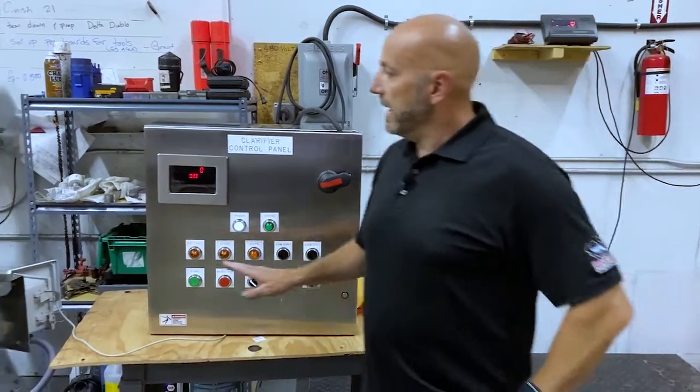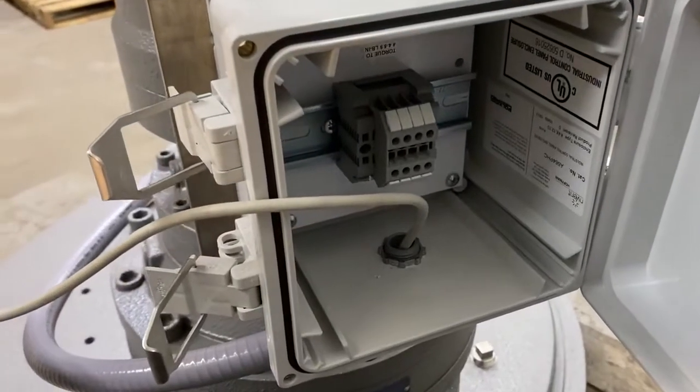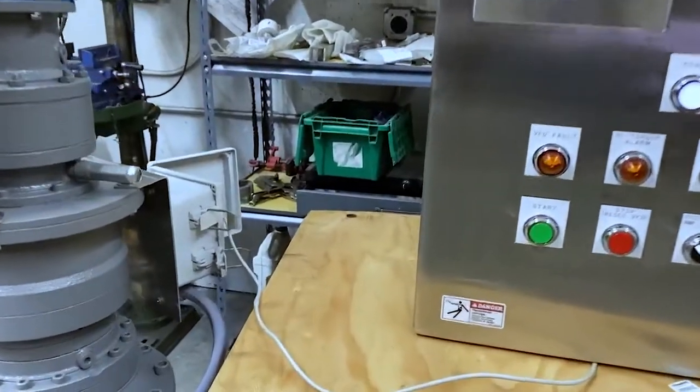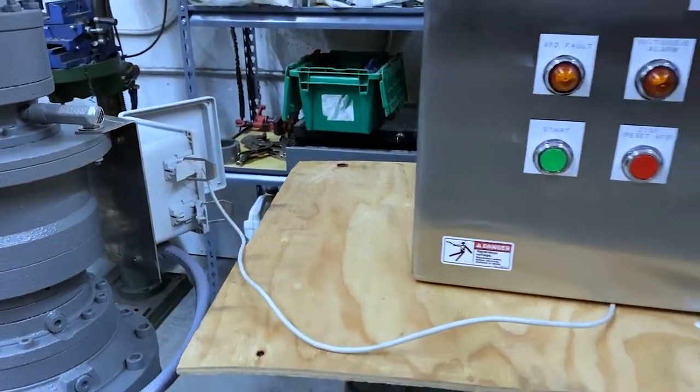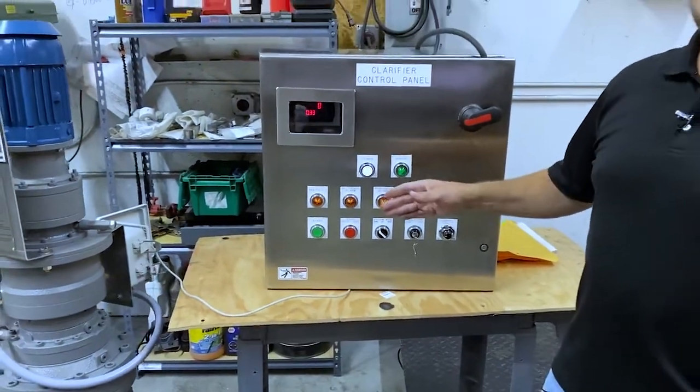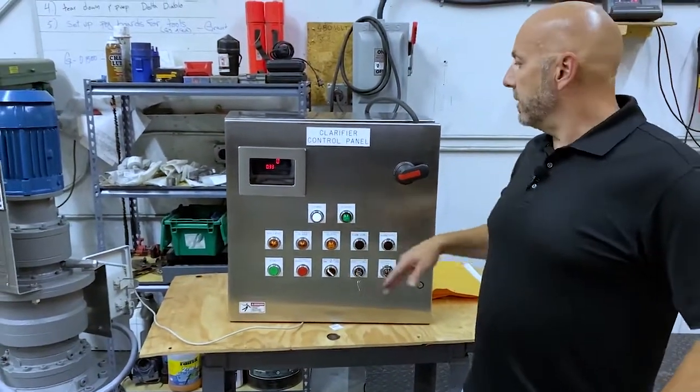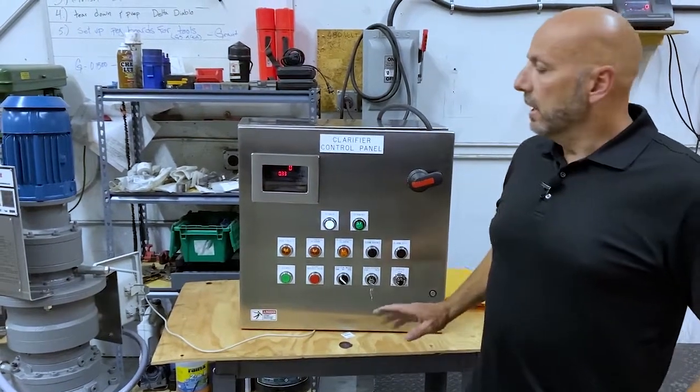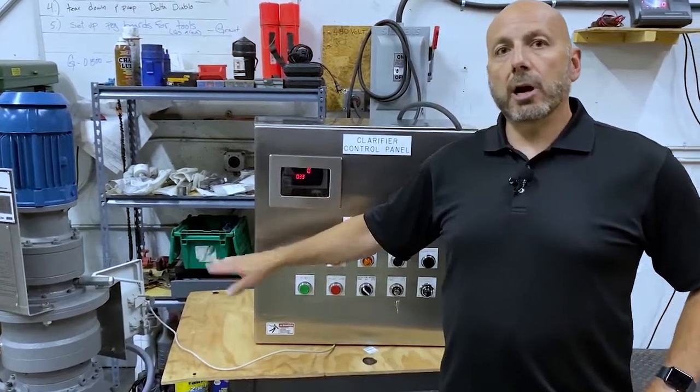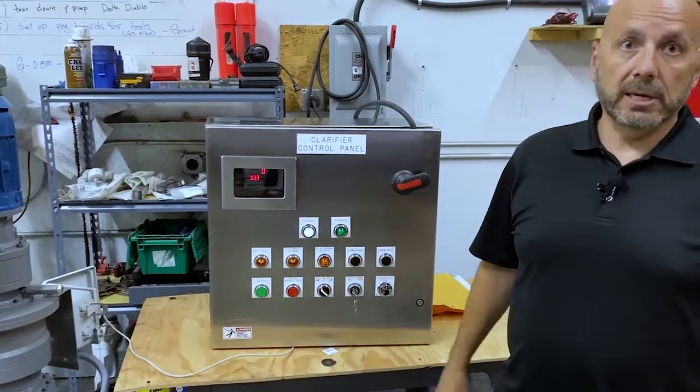There is a junction box on the back of the drive unit that the cable you're seeing out front is typically wired to. This cable does have a shield wire that will be landed to a terminal inside that box. That shield wire needs to be grounded all the way back to the panel. We highly suggest that the cabling you use from the J-box on the drive back to the panel is a shielded cable.